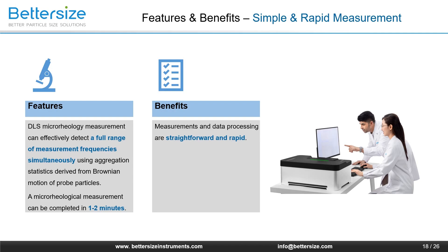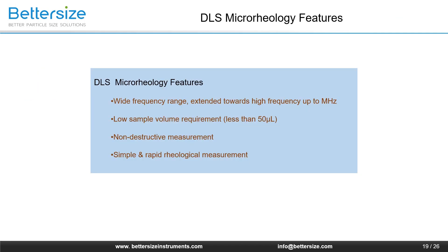B-nano series microrheology measurements are performed in 1 to 2 minutes, making both the measurement and data processing simple and fast. In summary, the features and benefits of DLS microrheology include: wide frequency range extended to high frequencies up to megahertz, small sample volume requirement of less than 50 microliters, non-destructive measurement, and simple and rapid rheology measurement.